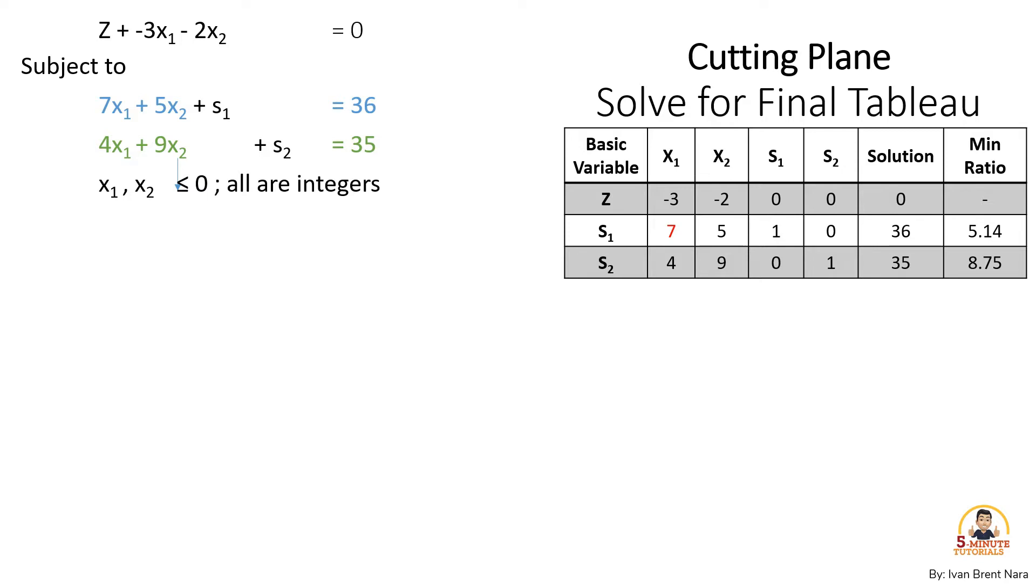Let's identify the entering variable in our first row x₁ and x₂ by finding the most negative number and that is x₁ which is negative 3. This rule is called the simplex optimality condition.